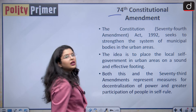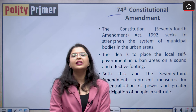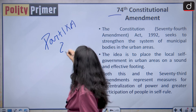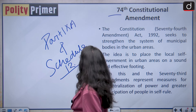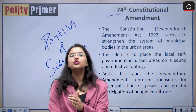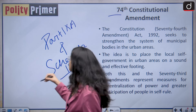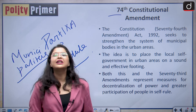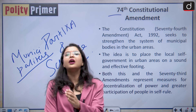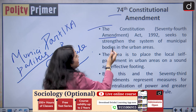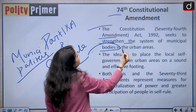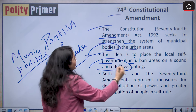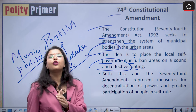Let us talk about the 74th Constitutional Amendment Act. Basically the 74th Constitutional Amendment Act inserted Part 9-A and Schedule 12 in our Indian constitution, and this talks about the constitution of urban local bodies — the constitution of municipalities. It is there to have a local self-government at the urban level. The 74th Amendment Act 1992 seeks to strengthen the system of municipal bodies in the urban areas, placing local self-government in urban areas on a sound and effective footing as per the constitution of local self-government in the village areas.